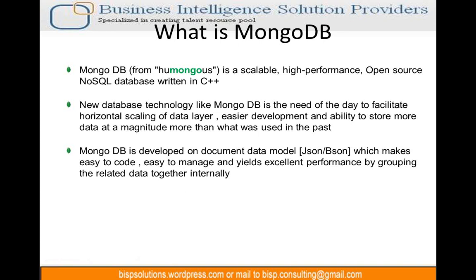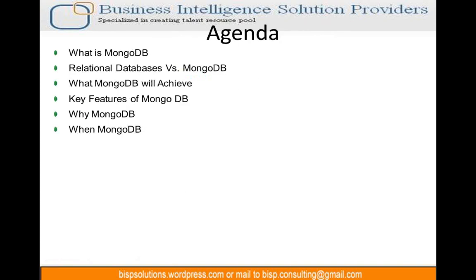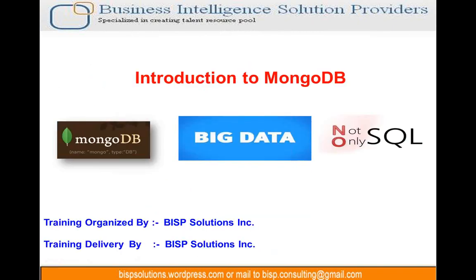JSON is JavaScript Object Notation. JSON is nothing but key-value pairs. For example, a document with 'name: Mongo' and 'type: DB' — name and type are the keys, and Mongo and DB are the values. In RDBMS terms, name and type would be two columns, but in MongoDB we call them keys. Everything is stored in the form of a key and a value.